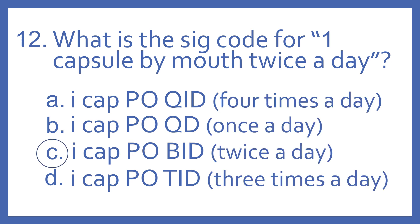And the answer is C. One capsule by mouth twice a day would be ICAP PO BID. BID is twice a day. QID is four times a day. QD is once a day. And TID is three times a day.